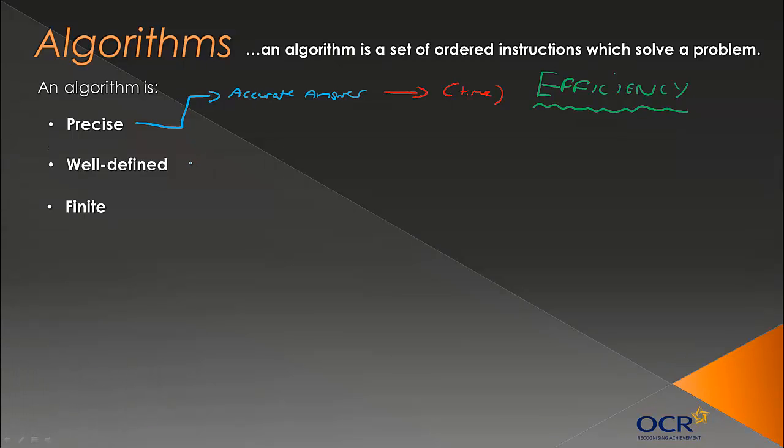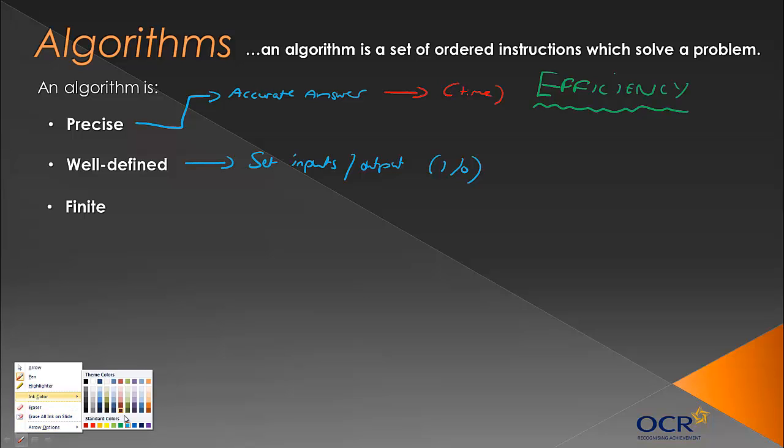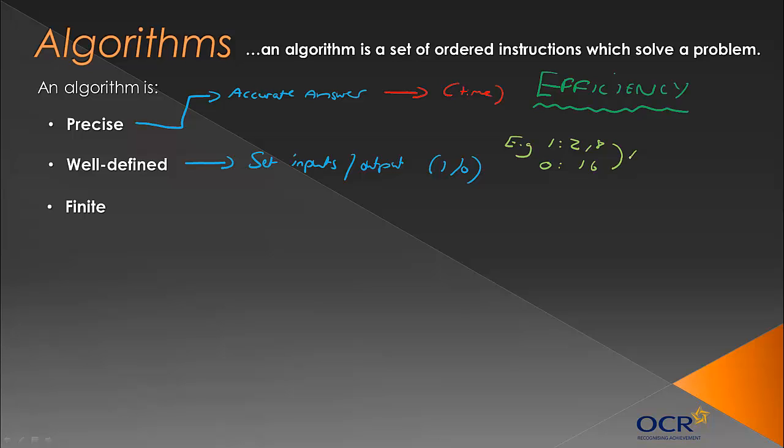We also want algorithms to be well-defined, which means they have a set input or inputs and set outputs. So inputs/outputs, and we'll also write this as I/O in case you see that notation. For example, if we have two inputs, 2 and 8, and we have an output of 16, we can see the algorithm has just multiplied them together. That's quite simple. You can see 2 and 8 times together is 16. That's what the algorithm has done.